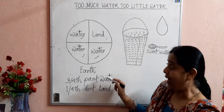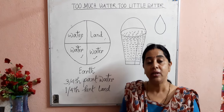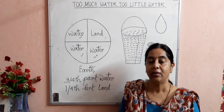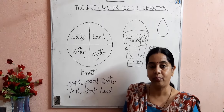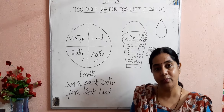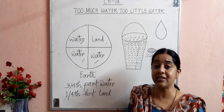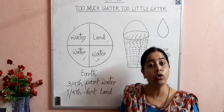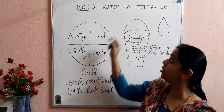Among these three-fourths of water, the maximum water is present in seas and oceans, which is saline water — salty water — that cannot be used by living beings. Plants die if they get this saline water. Other animals and human beings are also unable to drink this saline water. We human beings could not perform our daily activities with salty water. That's why it is said 'too little water.'